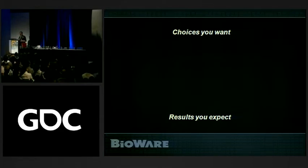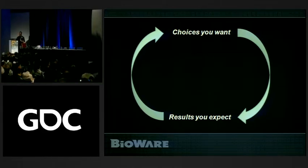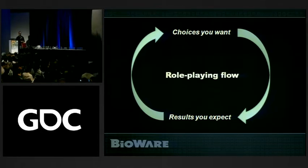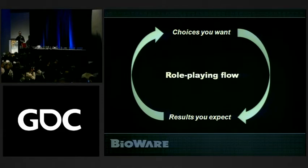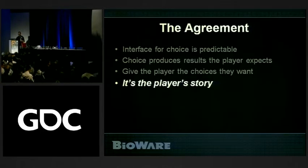So we have these two ideas of choices you want and results you expect, and it's a cycle that happens when dealing with objective narrative. When it's constantly reinforced as you're playing, we get what we call role-playing flow — you're really in the zone, getting what you want and making choices. But really, this is not a traditional role-playing experience. Through fantasy fulfillment and keeping people in the zone, we can still maintain a lot of the characteristics of the traditional role-playing experience in this new model.